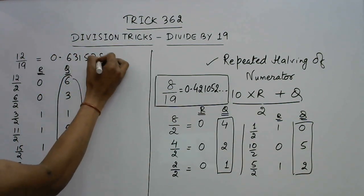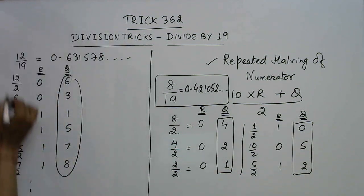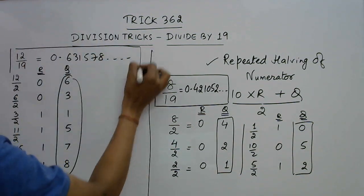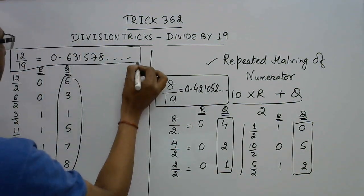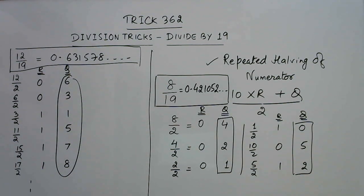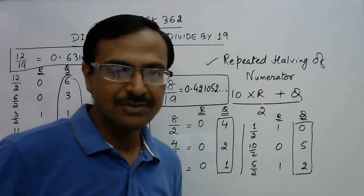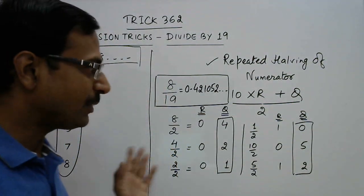So the answer will be 6, 3, 1, 5, 7, 8 and so on. So the answer for 12 by 19 is 0 point 6, 3, 1, 5, 7, 8 and so on.